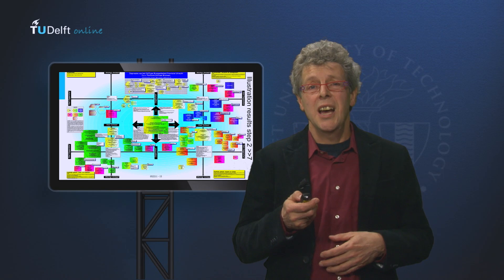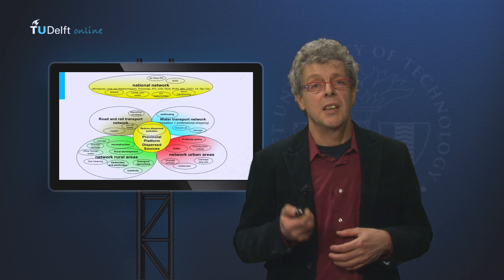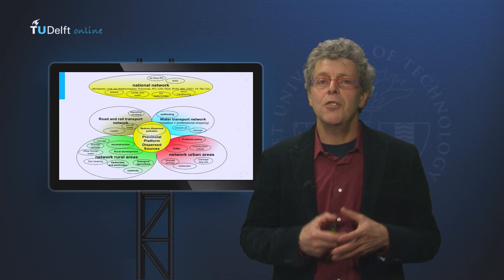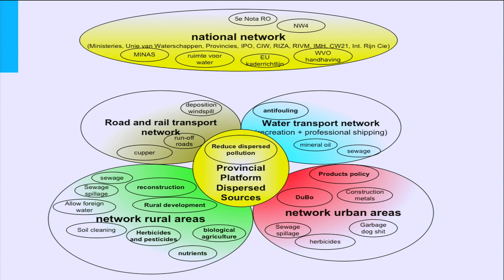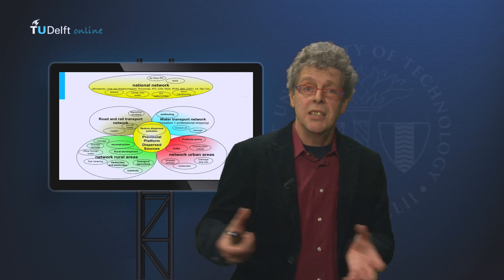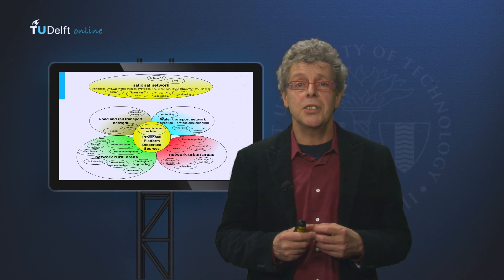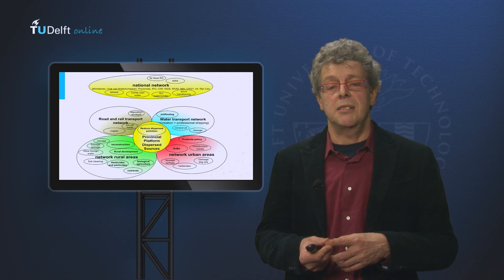We also made a somewhat simpler map for discussing their strategy. In the simpler map you see the platform in the middle and the four policy arenas it is working in. Referring to the Roman concept of arenas, these policy arenas are the fighting rings where the actors involved engage in a fight over what policy needs to be implemented. In green you have the agriculture sector, in red the built environment, in brown the rail and road infrastructure, and in blue the water transport and water quality sector.